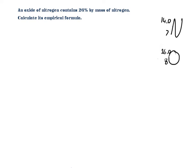In this video I'm going to be looking at a question which involves calculating the empirical formula of a given molecule, given the percentage composition by mass of the molecule. In this particular question I'm only given the percentage composition by mass of one of the elements present. So let's look at this question: an oxide of nitrogen contains 26% by mass of nitrogen - calculate its empirical formula.